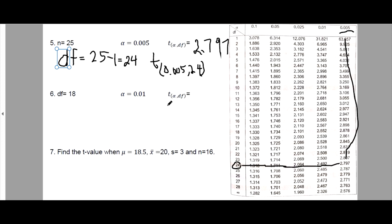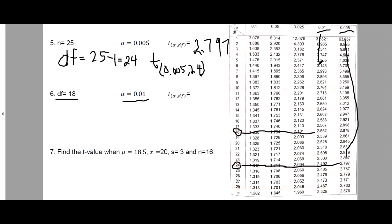Example 6: We are given degrees of freedom equals 18 and alpha equals 0.01. No need to find degrees of freedom since it is already given. Locating 0.01 on the column and df equals 18 on the table, the T-value is 2.552.